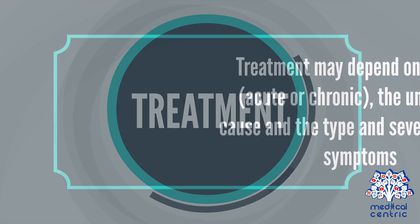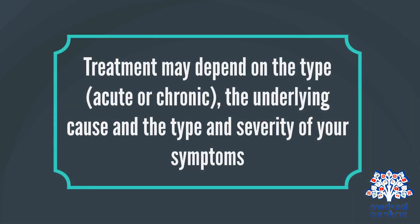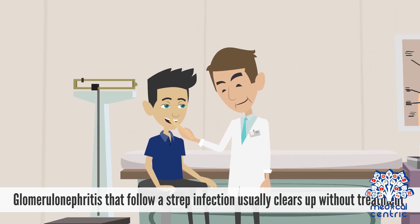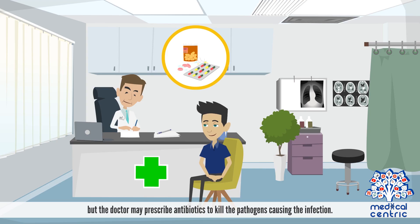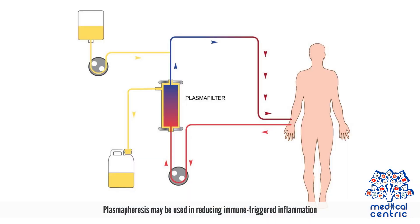Treatment may depend on the type — acute or chronic — the underlying cause, and the type and severity of symptoms. Glomerulonephritis that follows a strep infection usually clears up without treatment, but the doctor may prescribe antibiotics to kill the pathogens causing the infection. Plasmapheresis may be used to reduce immune-triggered inflammation.